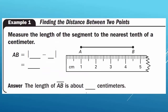Example 1: Finding the distance between two points. This goes with Postulate 1, the Ruler Postulate. It says measure the length of the segment to the nearest tenth of a centimeter. To find the length of the line segment, look at the distance between the endpoints. Point B is located at approximately 4.5 and endpoint A is at 1. Taking the difference: 4.5 minus 1 is 3.5. The absolute value of 3.5 is 3.5. So the length of line segment AB is about 3.5 centimeters.